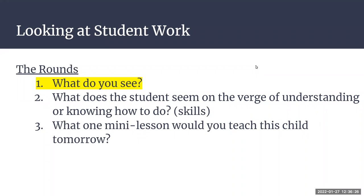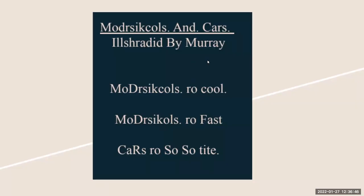When using the descriptive review protocol, we go through three different rounds and you can take notes on each. It's really important when you put a sample in front of your peers to try not to tell anything about the student. We want to look at what the student can do in this one sitting. We don't need to know if the student has an IEP, or if they woke up late, or any background information. We just want to look at this in a very descriptive way — what can the student do in their writing — and use that evidence to determine where to go next with our instruction.